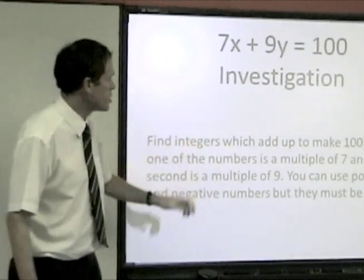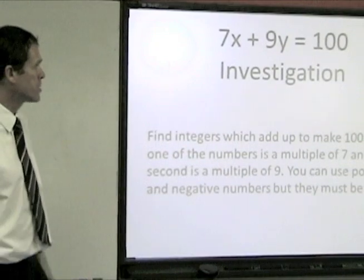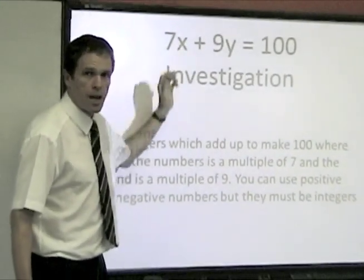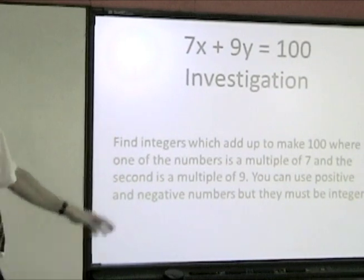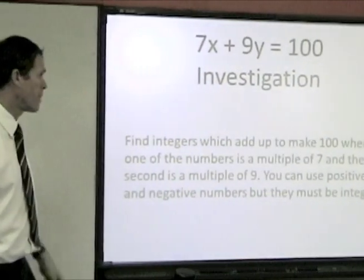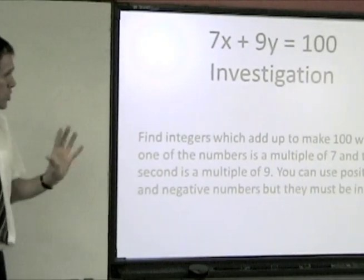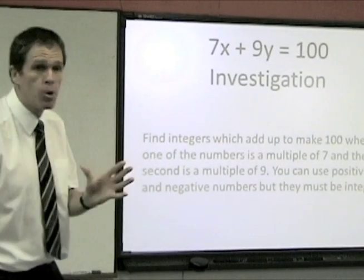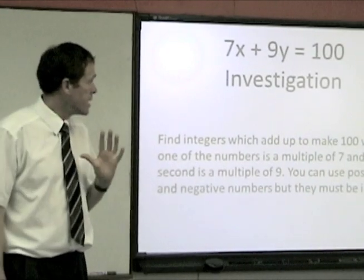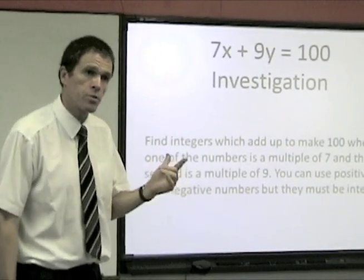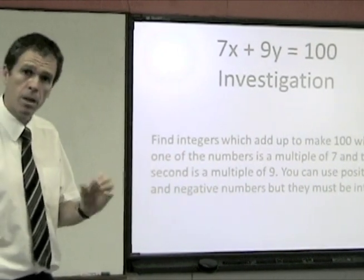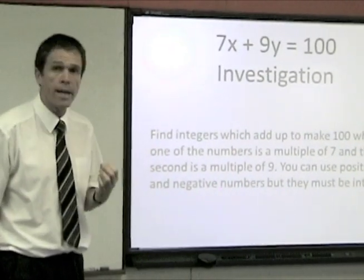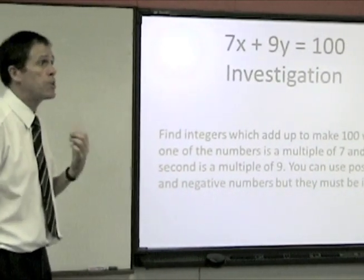So what we are looking for here is integers which add up to make 100, that is where the 100 comes from. Where one of the numbers is a multiple of 7, that is why we are writing 7 times x and the second is a multiple of 9, that is why we are writing 9 times y. And the sum of those must make 100. Now you can use positive and negative numbers but they must be integers. I hope you are all clear what we mean by an integer. An integer is a whole number, for example 1, 2, 3, 4, 5, but it also includes 0 and it includes negative numbers, negative 2, negative 3, negative 4 and so on. So all of those numbers are integers, you cannot use fractions and you cannot use decimals.